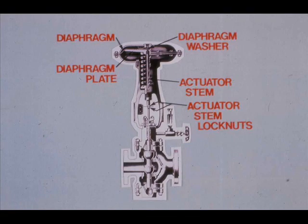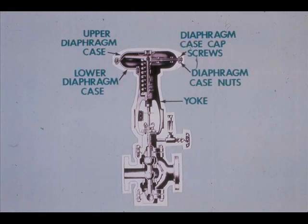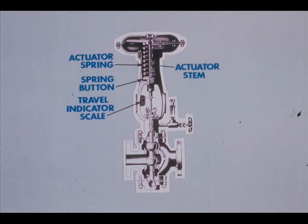The more common actuator is the pneumatic spring opposed diaphragm type. Locate these parts: actuator stem lock nuts, actuator stem, diaphragm, diaphragm plate, diaphragm washer. Also locate the upper diaphragm case, lower diaphragm case, diaphragm case cap screw, diaphragm case nuts, yoke, and the actuator spring.